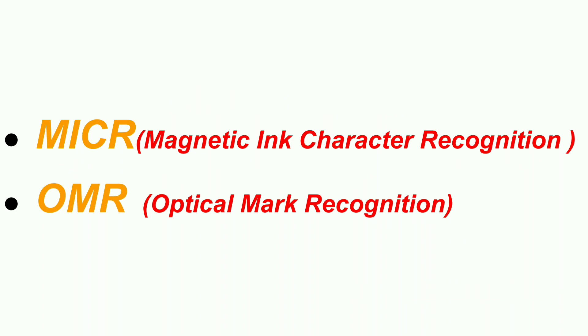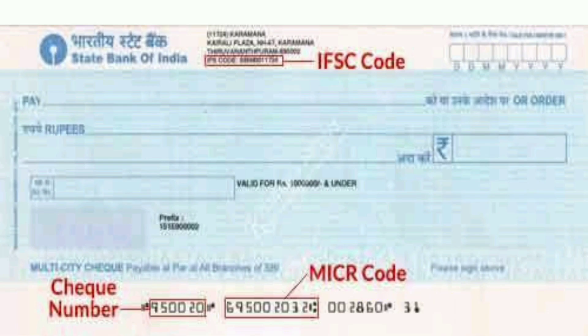First one: MICR. See the picture. This is a bank check. I have marked three codes: bank check number, MICR code, and IFC code. Just understand that these codes are written in a special ink — a magnetic ink is used to print these characters.